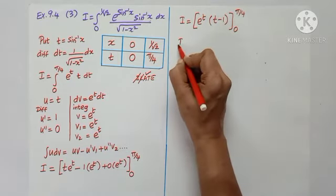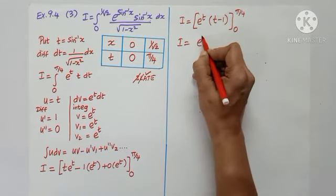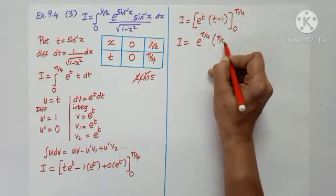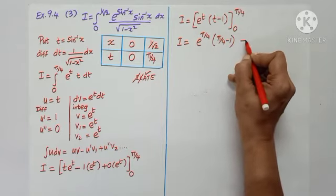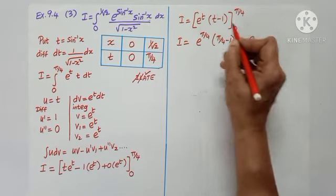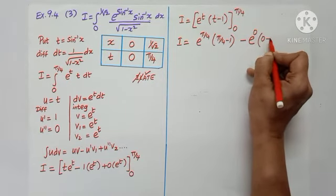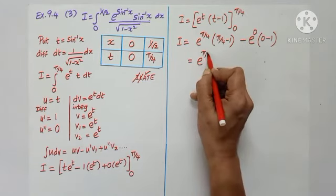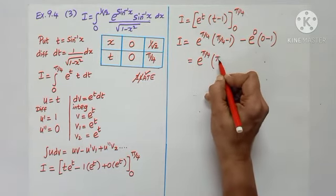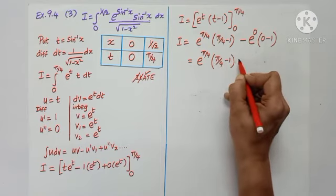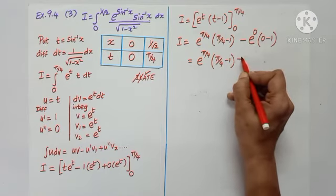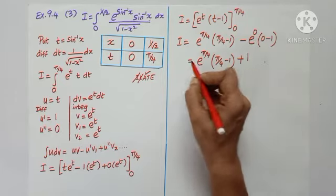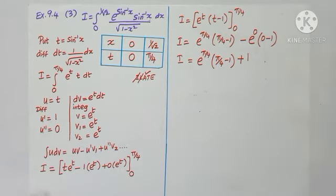Substituting limits: upper limit t = π/4 gives e^(π/4)·(π/4 − 1). Lower limit t=0 gives e^0·(0 − 1) = 1·(−1) = −1. Upper minus lower: e^(π/4)·(π/4 − 1) minus (−1) = e^(π/4)·(π/4 − 1) + 1. That is the answer.